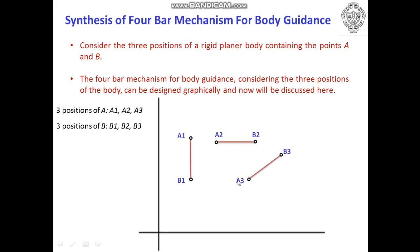If you know the coordinates of A3 and B3, you can find out the inclination of the link. As the positions and length of the coupler are known, we need to find out the length of the fixed link, the length of the input crank, and the length of the output crank using a graphical approach.